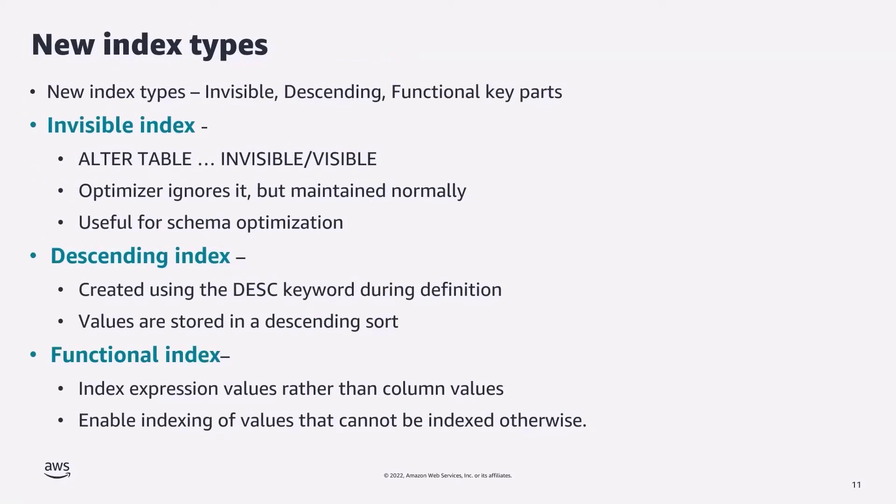MySQL 8.0 also introduced several new index types. As many know, indexes efficiently sort and store data for queries. First, there is a new type called invisible index. Using the alter table command, you can make an index invisible — this doesn't drop the index, but the optimizer will no longer consider it for query plans. This lets you test the performance impact of removing an index without actually dropping it, making it super useful for finding redundant or unused indexes in a practical way.